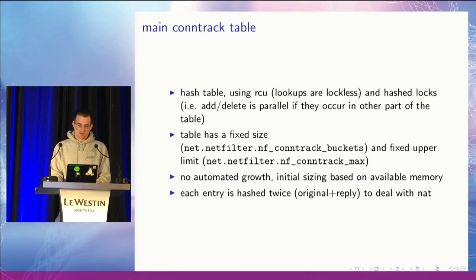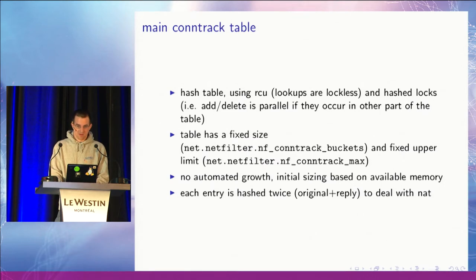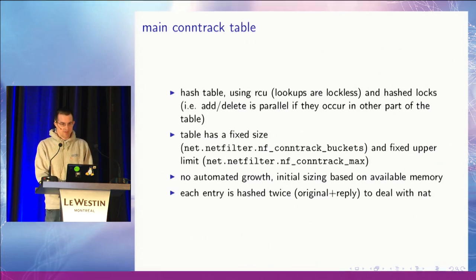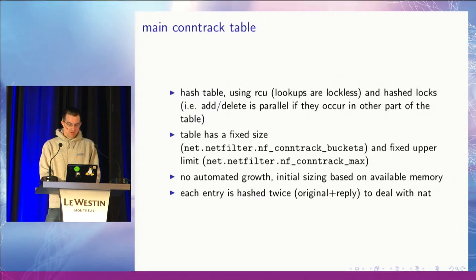The main connection tracking table nowadays is completely lockless for all read accesses, and we can even do parallel add and delete operations on the table provided that they occur in different slots. This is mostly the work of Eric Dumazet and then later revived by Jesper Dangaard Brouer. The table has a fixed size exposed by sysctl and there is no automated growth, so we just pick an initial value based on the memory of the system and leave it to the system administrator to make adjustments as needed. Every entry is hashed twice — once in the original direction and once in the reply direction.